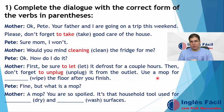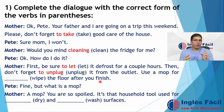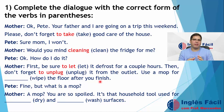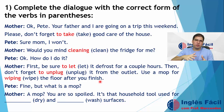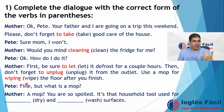Don't forget to unplug the fridge from the outlet. Use a mop for wiping the floor after you finish. When we use the preposition 'for,' we are obliged to use the verb in the gerund. So: 'Use a mop for wiping the floor.' Pete says: 'Ok, no problem. But what is a mop?' The mom says: 'A mop? You are so spoiled!'